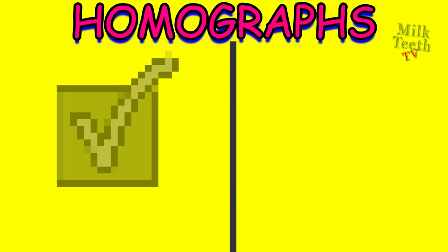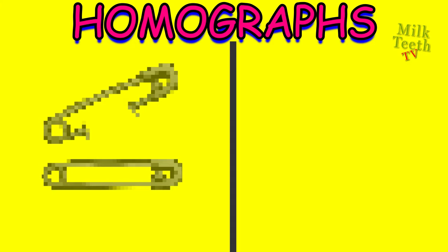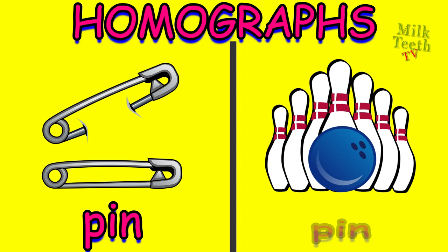Right — meaning correct. Another right — meaning right side. Pin — or a safety pin. And pin — used in the game of bowling.